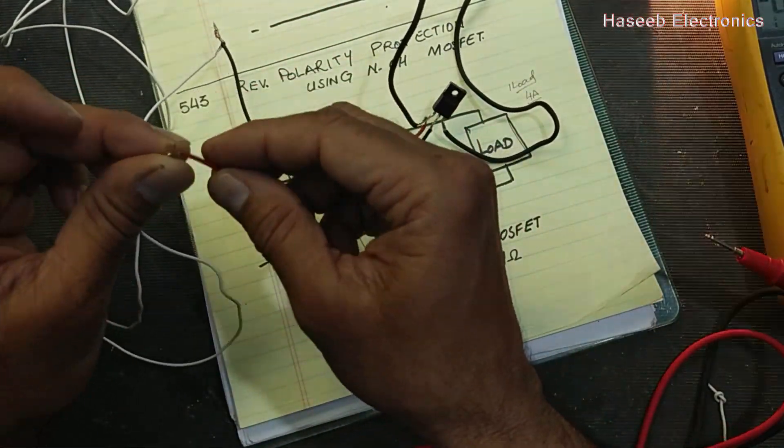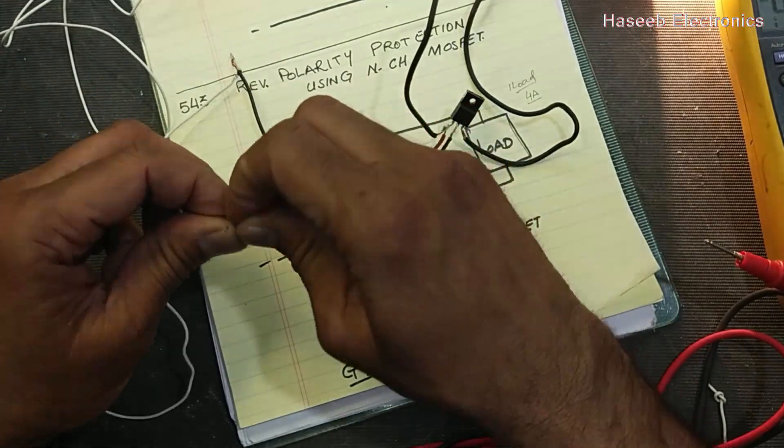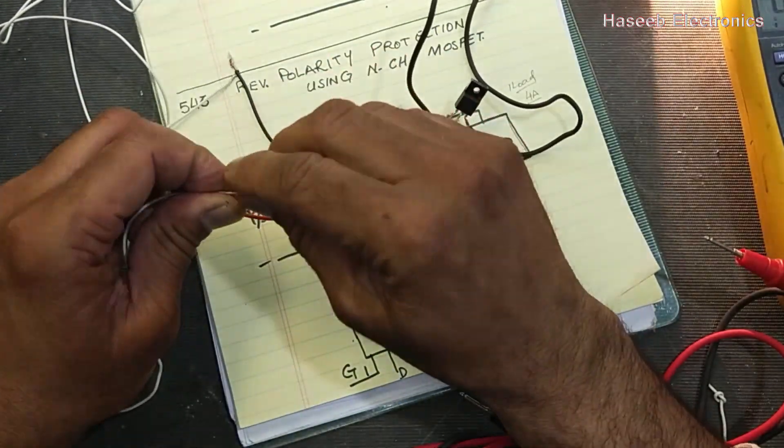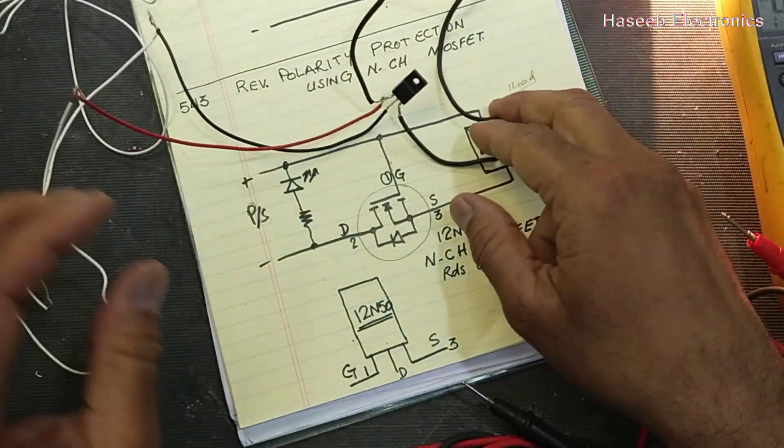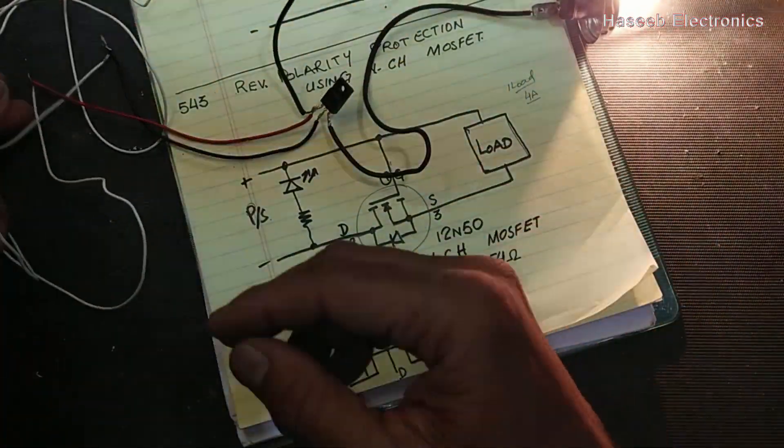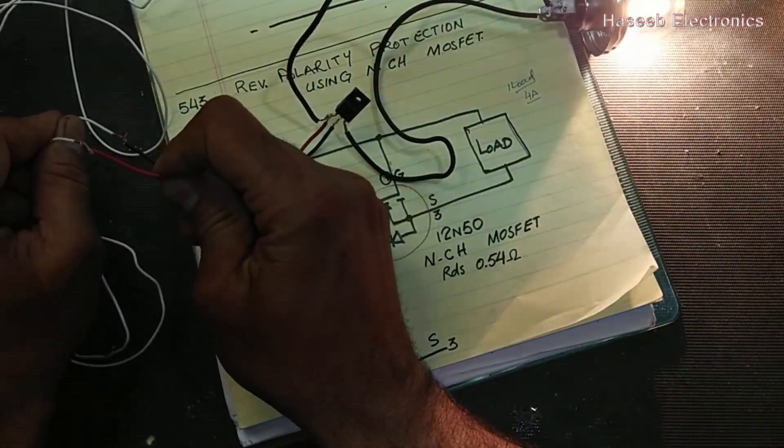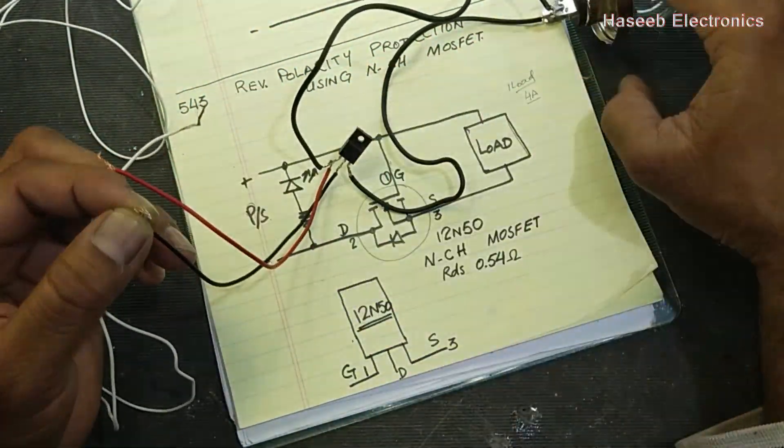When the polarity is good, this circuit will pass the voltage. So this circuit will protect from reverse voltage.